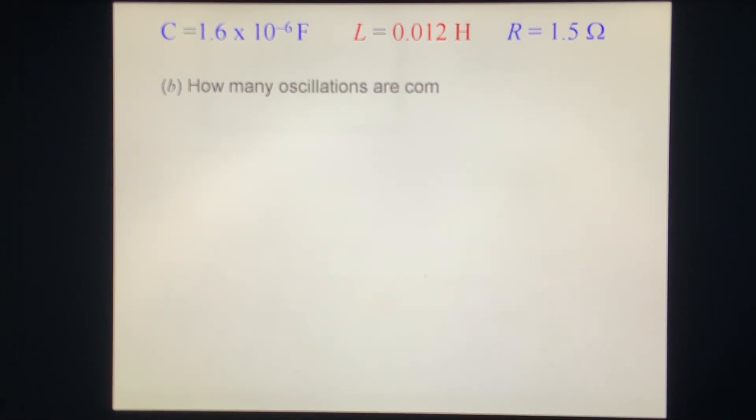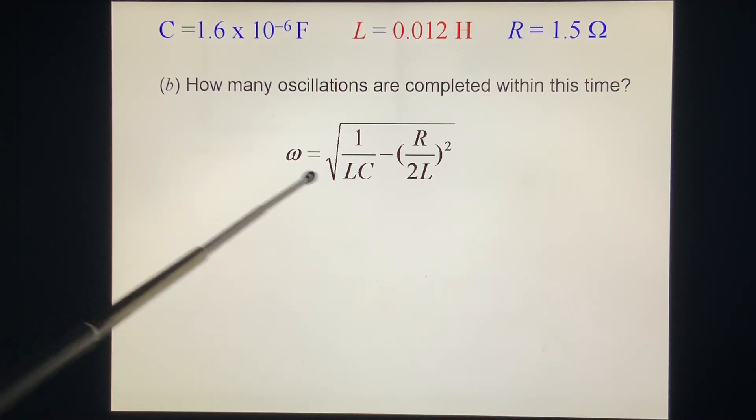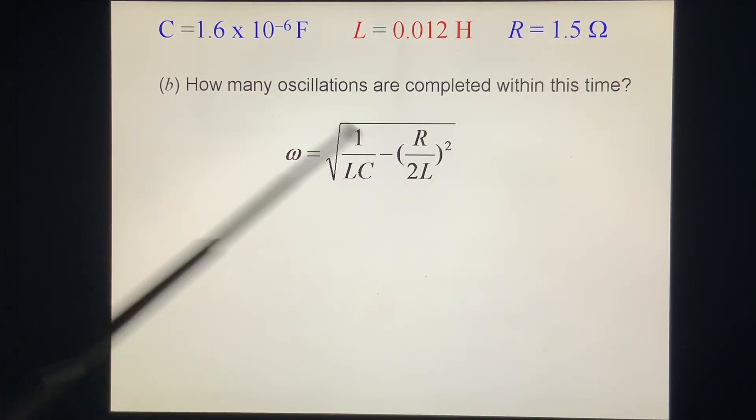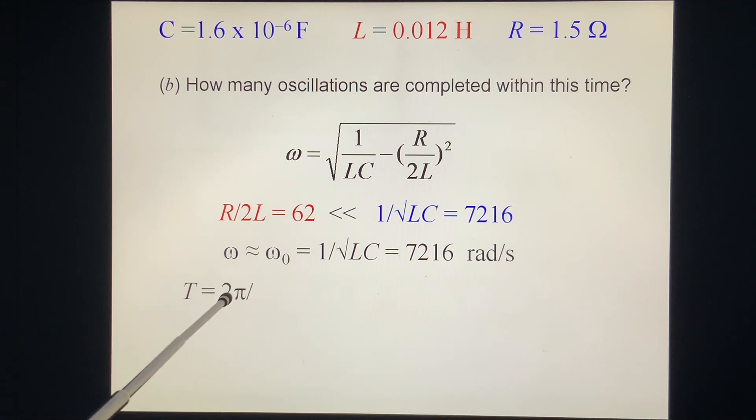Question B: How many oscillations are completed within this time? We have time. Once we know the period, we can find this answer. What is the period? Let's see. First we find ω. In this case, we put numbers in, we find R over 2L is much smaller than 1 over √(LC). So we drop this one, this is physics, approximately it's okay. So ω₀ equals 1 over √(LC). We put L, we put C, we get ω. Once we get ω, we get the time period t. ωt equals 2π, so t equals 2π over ω. We get the t. Once we get the period, we know how many cycles. Because we already find that this time is 0.011. In 0.011 seconds, it drops to half.